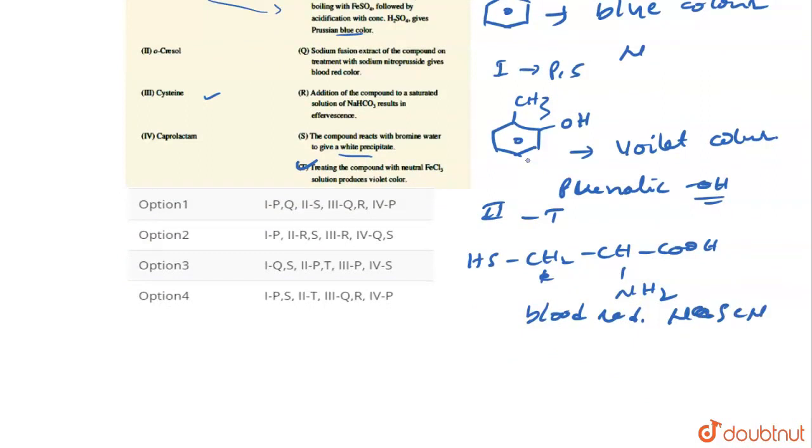Next, coming to caprolactam. So caprolactam, they are given, actually the caprolactam structure is NH double bond O. So this is the structure of caprolactam. So this caprolactam is blue in color in presence of nitrogen.